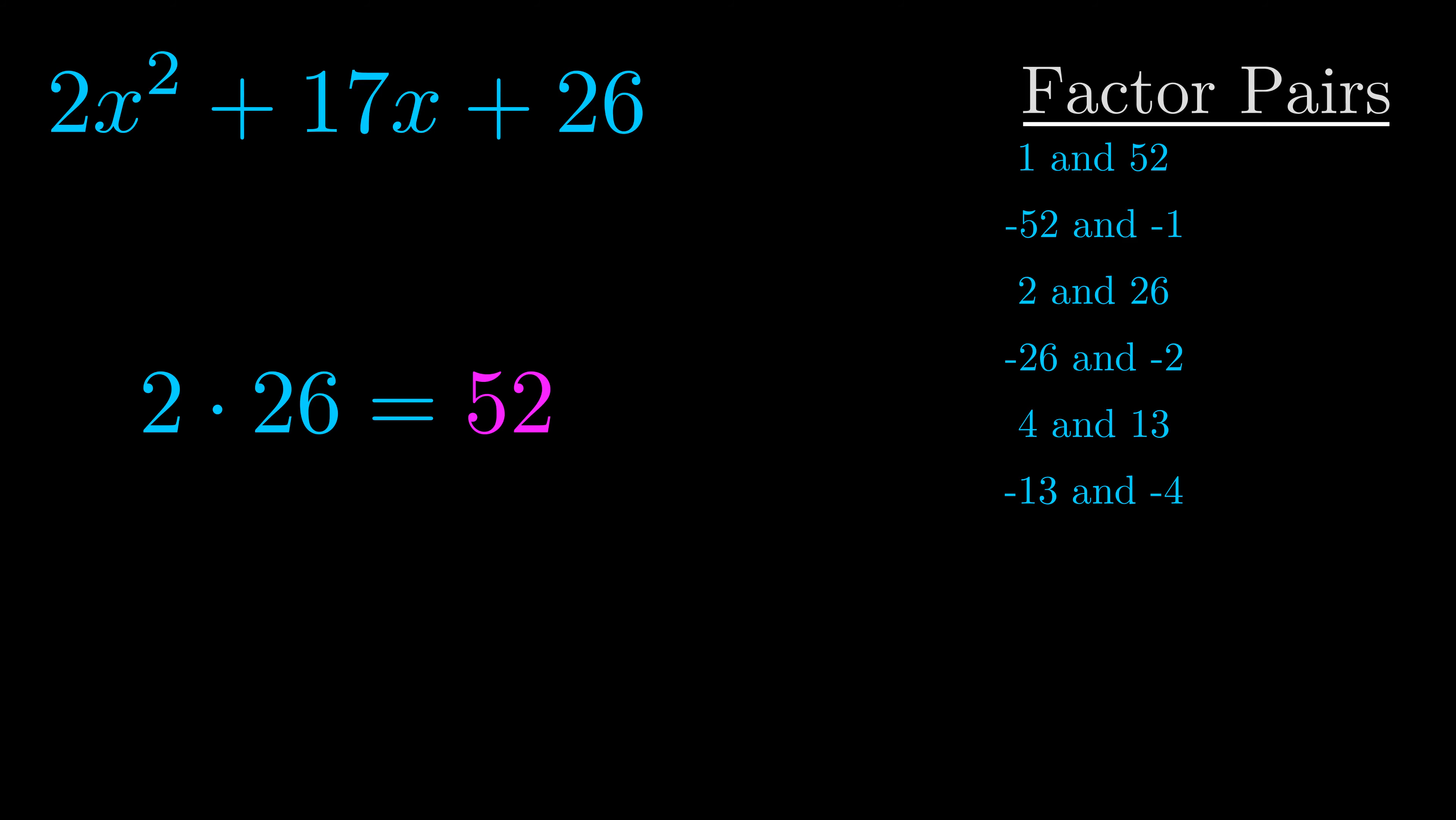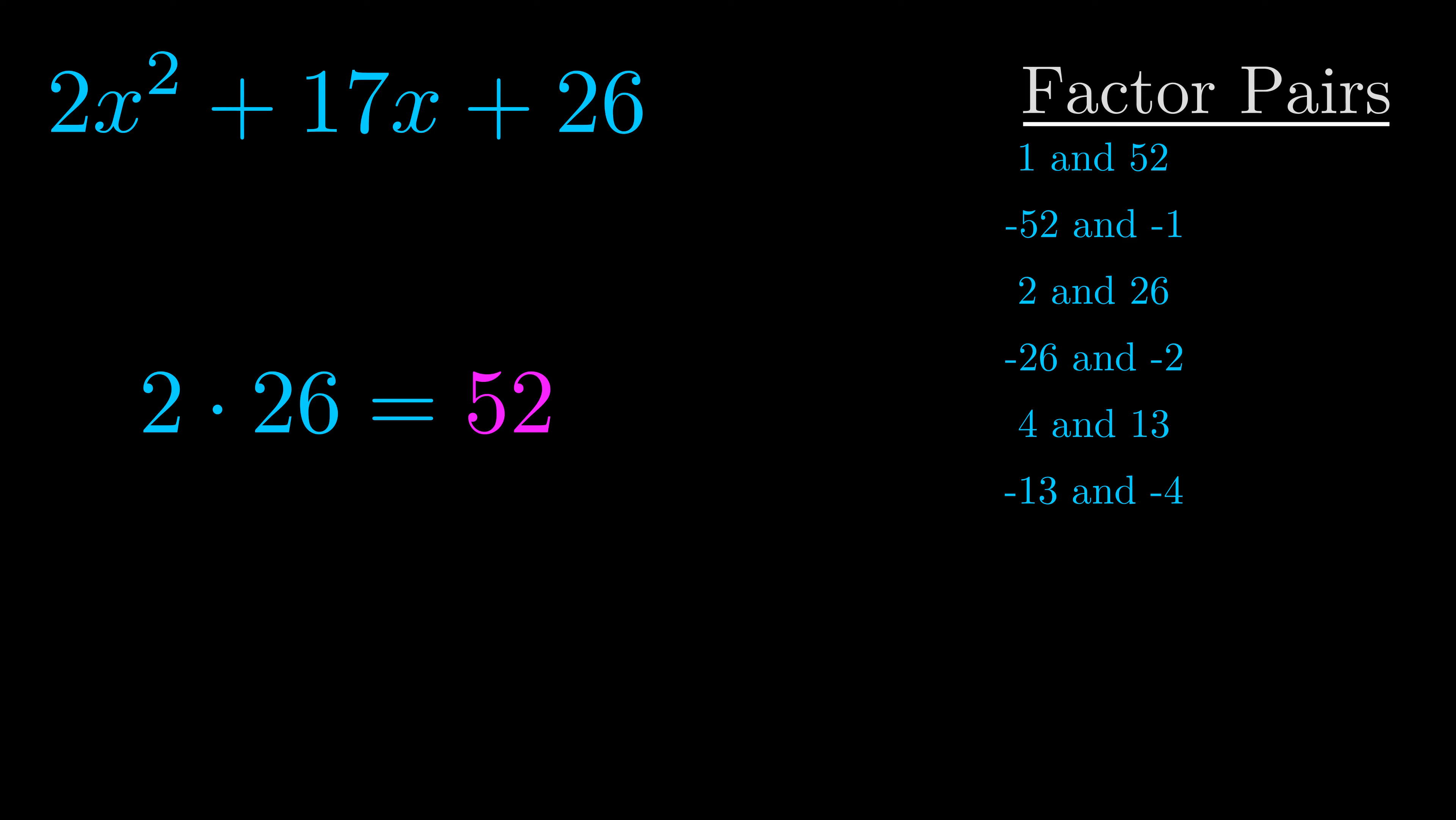Now once you have these factor pairs the goal is to find which of these pairs adds to the b value. The b value is the coefficient on the x term. That's the middle term, the one that we haven't done anything with yet.